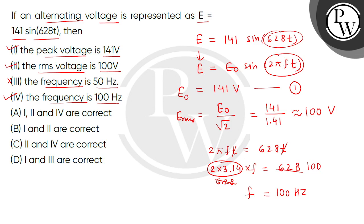It means statement number 3 is incorrect and statement 4 is correct. So statements 1, 2, and 4 are correct, so the correct answer will be option number B. Thank you.